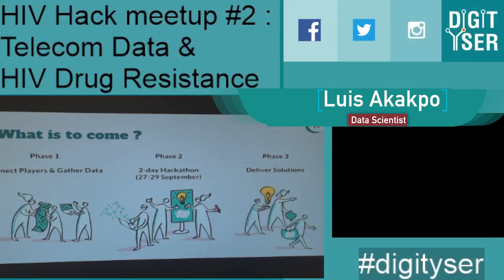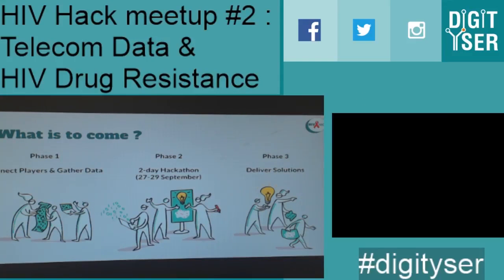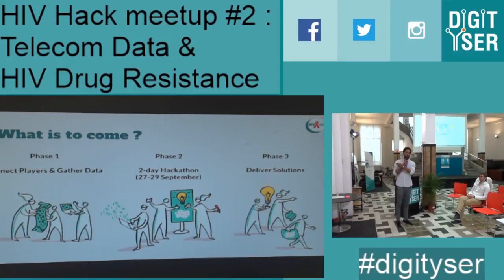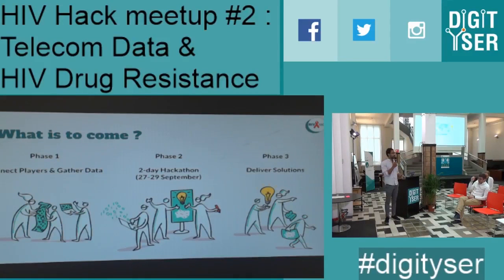I will conclude the meetup by explaining the state of the HIV hack. These were the three phases we defined for the project. We are currently in phase one, that's why we're having these meetups right now, and then the hackathon is going to be end of September, and then if we have good solutions we would like to implement them in the countries to really have an impact with what we developed.